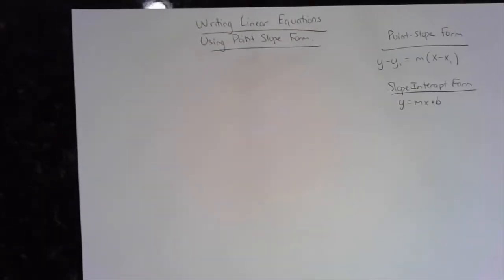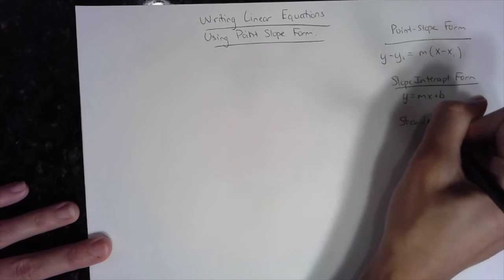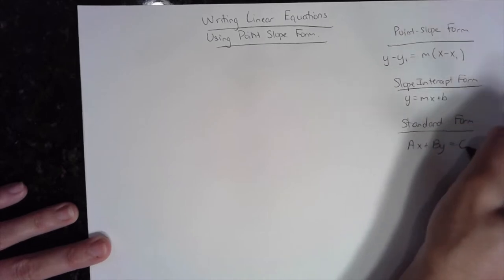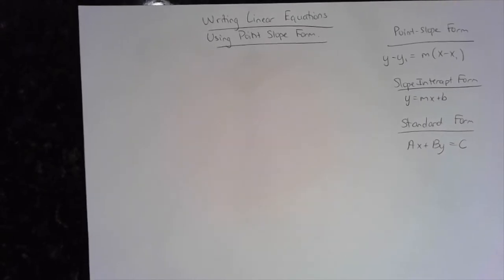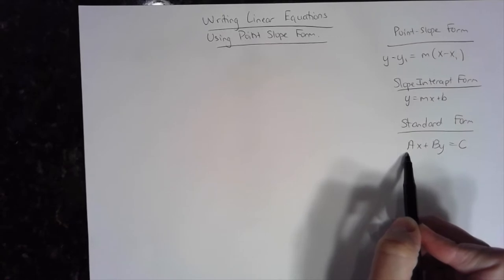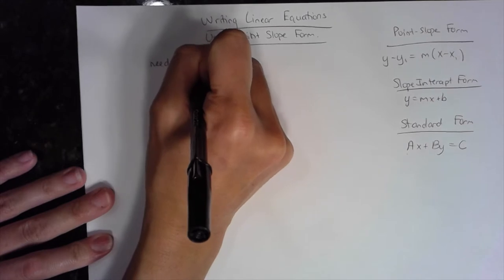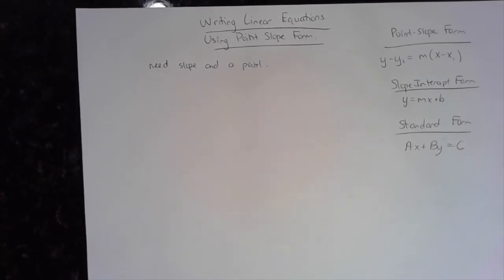The only way you get the slope and y-intercept from slope-intercept form is if y is isolated on the left. Then we have standard form: ax plus by equals c. Nothing specific can be gathered from this form directly, and a cannot be negative or a fraction. Every time you write the equation of a line, you're going to need a slope and a point — always.